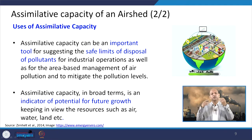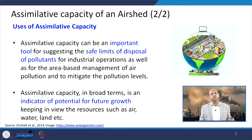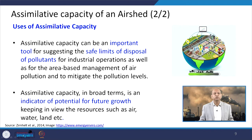The uses of assimilative capacity: we should know that it can be an important tool for suggesting the safe limits of disposal of pollutants for industrial operations, or for planning an industrial area, as well as for area-based management of air pollution and to mitigate pollution levels. If you are planning a new city or new industrial area, you estimate the assimilative capacity to know how much pollution load can be discharged. In broad terms, assimilative capacity is an indicator of potential for future growth, keeping in view resources such as air, water, and land.